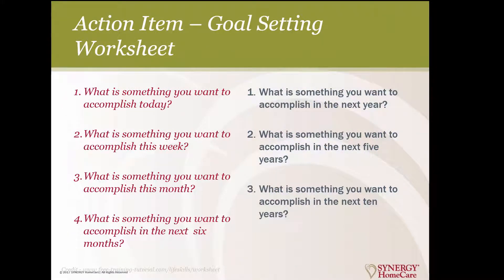So I have another action item for you. Here's a goal-setting worksheet. On the left-hand side, the red is all about short-term goals — what's something you want to accomplish today, this week, this month, even in the next six months? Those would be your short-term goals. What's something you want to accomplish in the next year, in the next five years, in the next 10 years? Those are going to be your long-term goals. This is an activity for you to do, and it's something to come back to as you think about how close you are to achieving some of these and making some very actionable items.